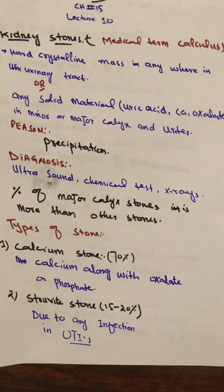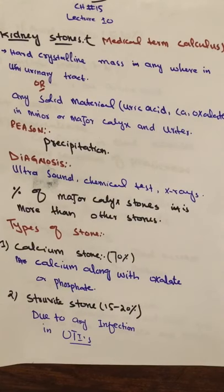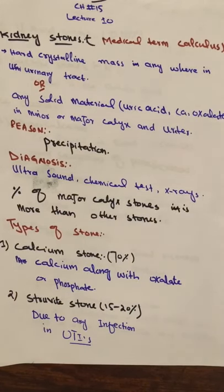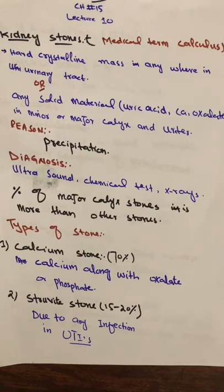Another type is struvite stones. Struvite stones occur due to any infection — any infection in kidney disease or urinary tract infections. If there is any infection, involving the filtration process, deposition, precipitation, and ions, these make up about 15 to 20% of stones. These are struvite stones caused by infections that form stone formations.